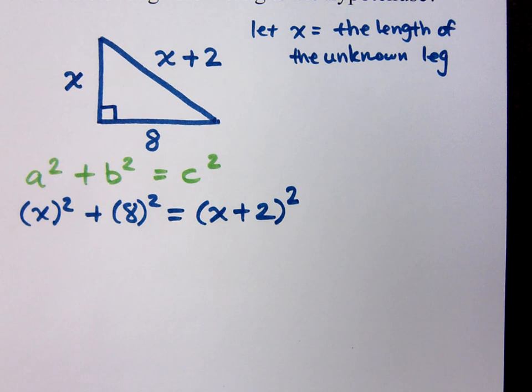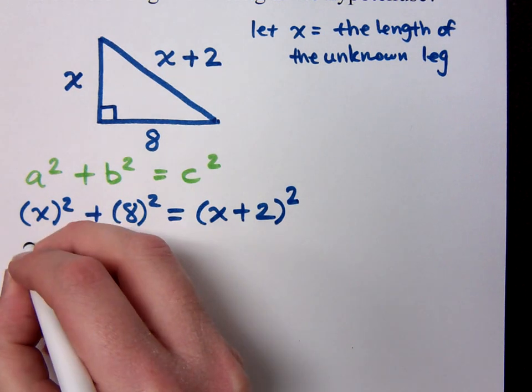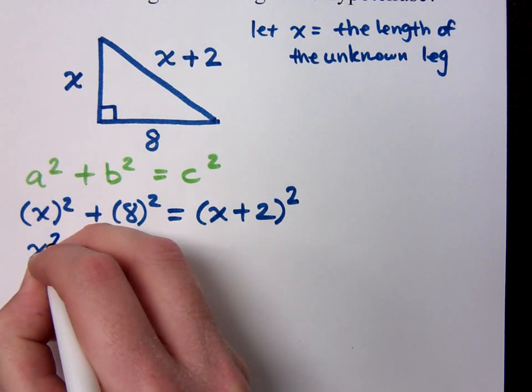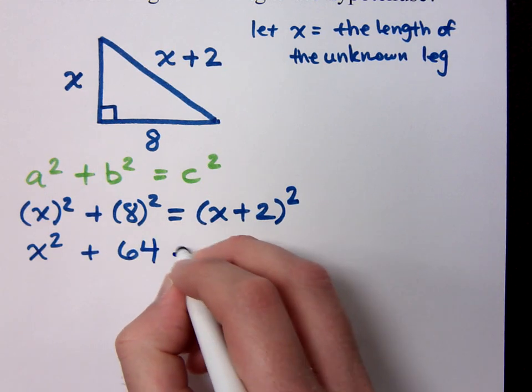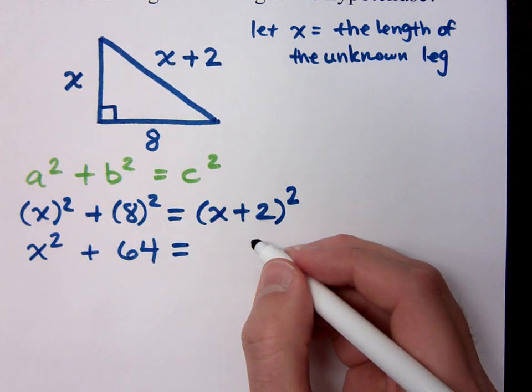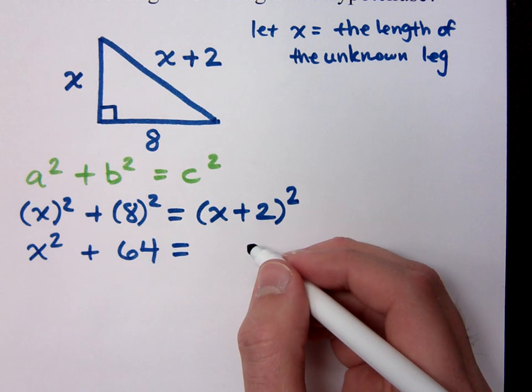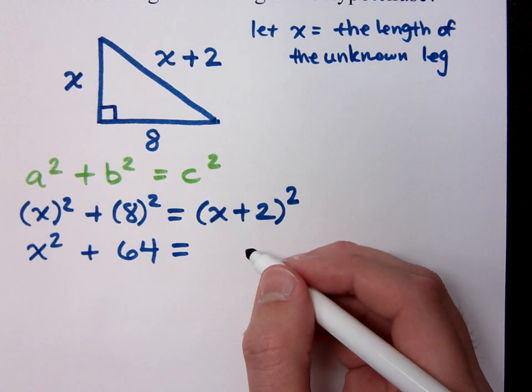So what is x squared? That's x squared. 8 squared is 64. Now, I'm squaring a binomial, just like I did in the last chapter, so make sure you square this correctly. What do you get?